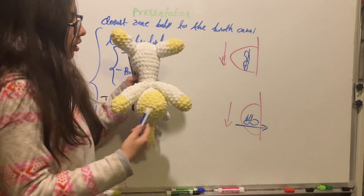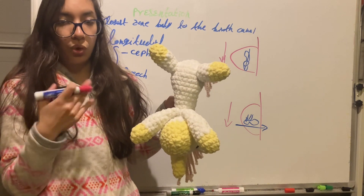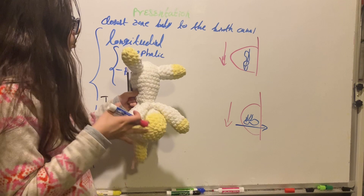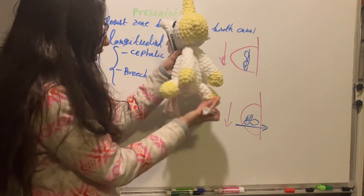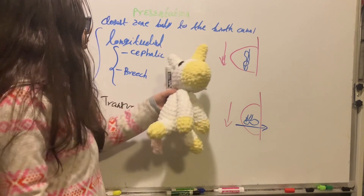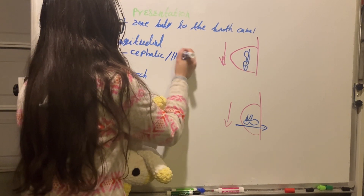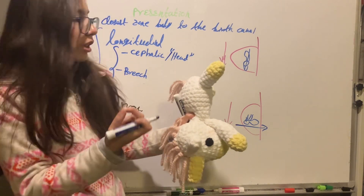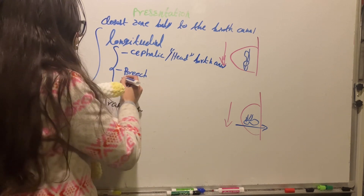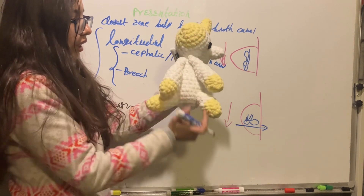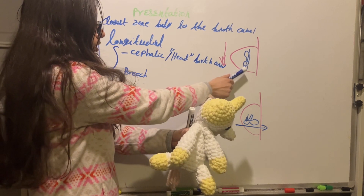In cephalic presentation, the head is closest to the birth canal — specifically a particular part of the head, which we'll cover in the next video. In breech presentation, the legs and perineum are closest to the birth canal. So cephalic means the head is nearest the birth canal, while breech means the lower extremities and perineum are nearest.